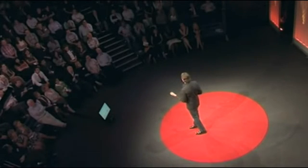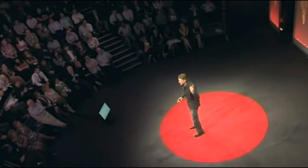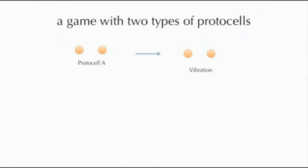So now that you're all experts on protocells, we're going to play a game with these protocells. We're going to make two different kinds. Protocell A has a certain kind of chemistry inside that when activated, the protocell starts to vibrate around, just dancing. These are primitive things, so dancing protocells, that's very interesting to us.